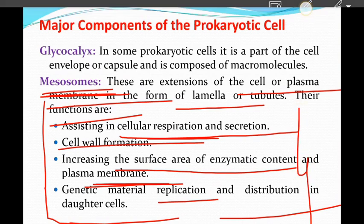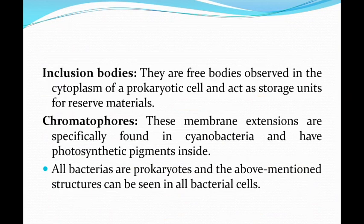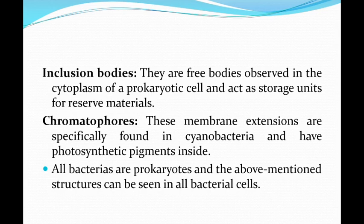And then inclusion bodies — they are free bodies observed in the cytoplasm of a prokaryotic cell and act as storage units for reserve materials. And then chromatophores — these are coloring pigments, membrane extensions specially found in cyanobacteria, and have photosynthetic pigments inside. All bacteria are prokaryotes and these structures can be seen in all bacterial cells.